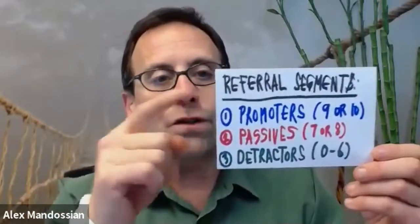The three referral segments are: first, a promoter. A promoter is someone who, upon being asked a question — and Fortune 500 companies like Enterprise Rent-A-Car, Dell Computer, Costco, and AT&T use this — gets asked 'The Ultimate Question.' It's one question followed by a second that refines it, developed by Fred Reichheld. If you get a score of 9 or 10, that's a promoter — a 9 is an A-, a 10 is an A+.